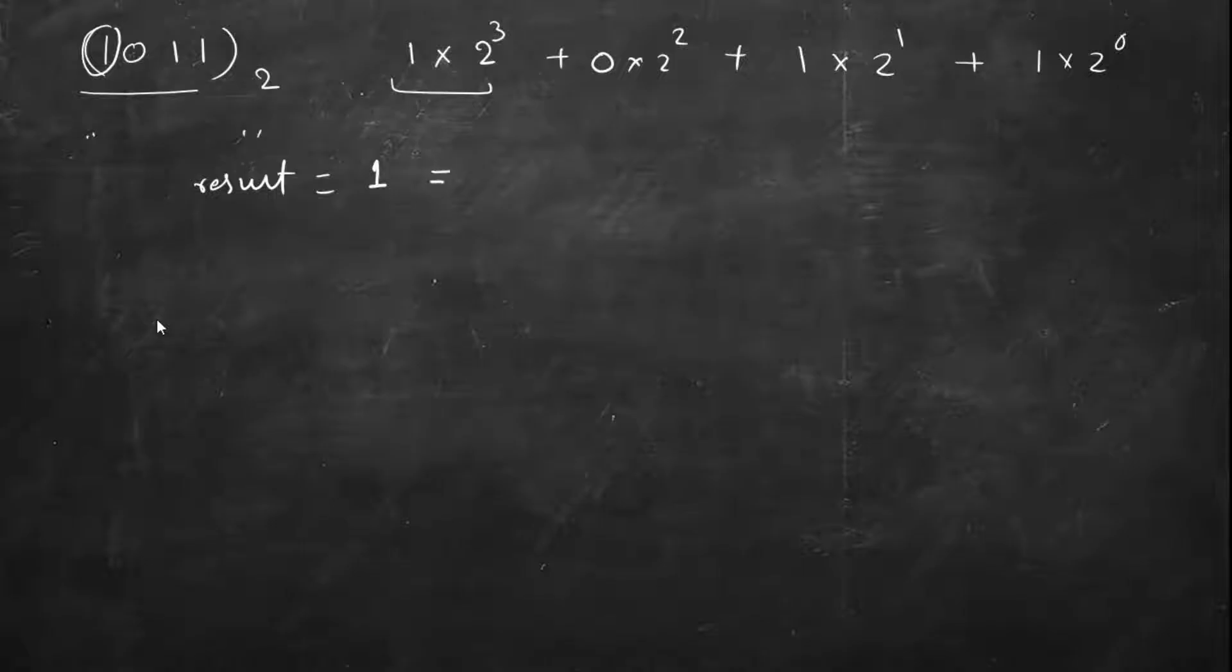So this is the same as 1 multiplied by 2 raised to the power 0. Next we come here at the second character. We can write result multiplied by 2 plus whatever is the value, 0.